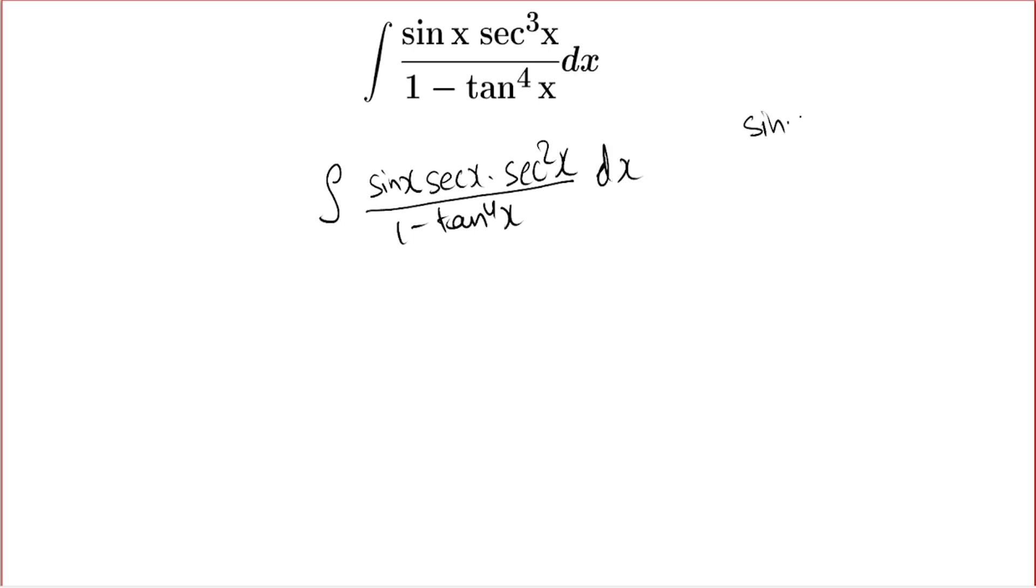Okay, so our integral is tan x into sec square x over 1 minus tan to the power 4x dx. Now I am going to substitute tan x into sec square x over 1 minus tan to the power 4x dx.